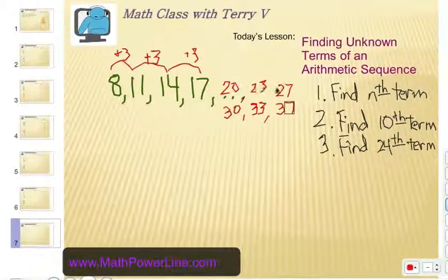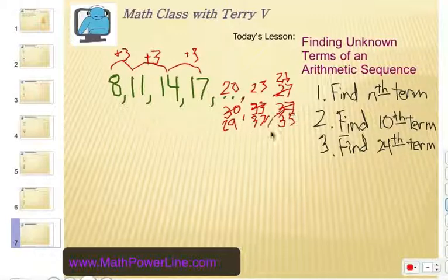Okay, wait, I want to make sure my math is right. No, I made a mistake. Let's go with 26, 29, 32, and let's go 35. Okay, a little bit messy there, but we think that the 10th term is 35.